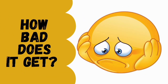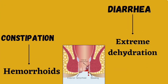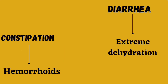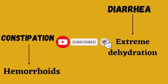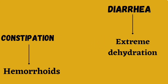So how bad can it get? Constipation can result in hemorrhoids, which are swollen veins in the lower rectum that can lead to bleeding, itching, and significant discomfort. On the other hand, diarrhea leads to extreme dehydration and loss of important minerals like sodium and potassium, which in turn may lead to electrolyte imbalance and sometimes even organ failure.